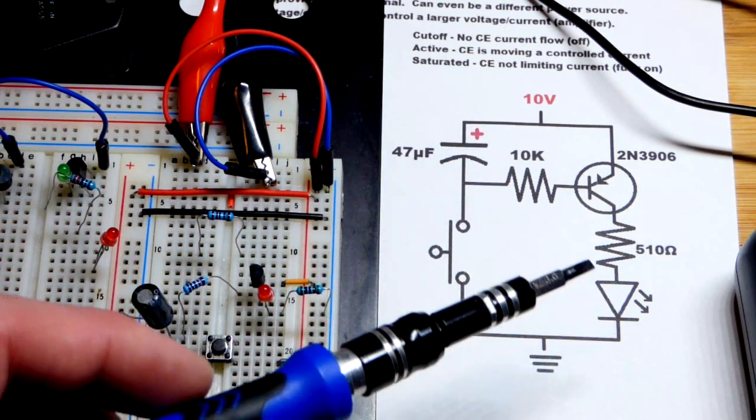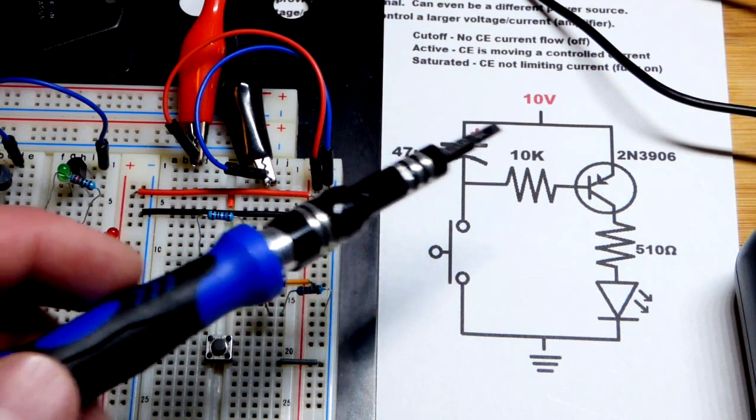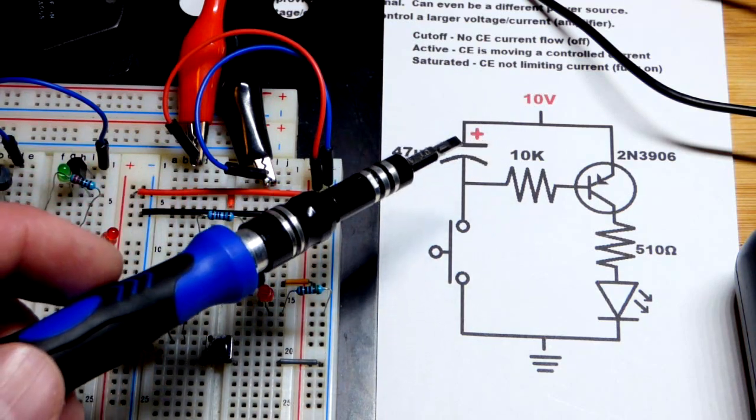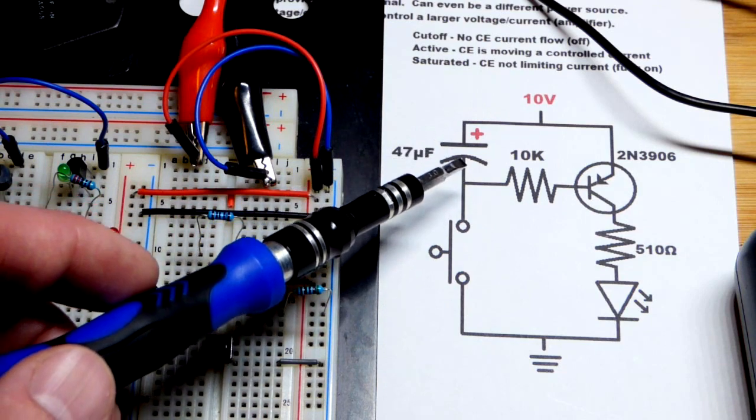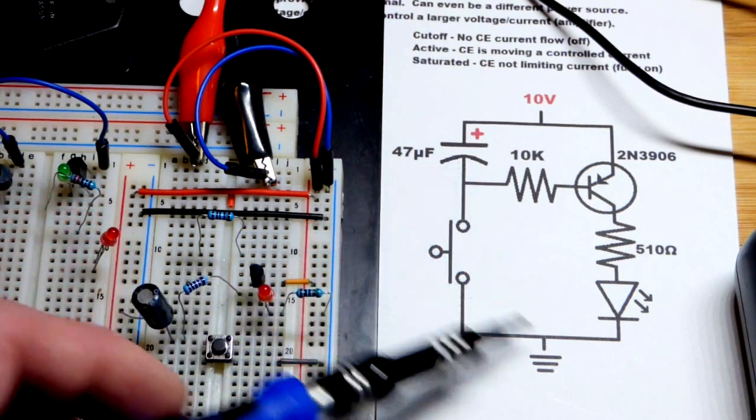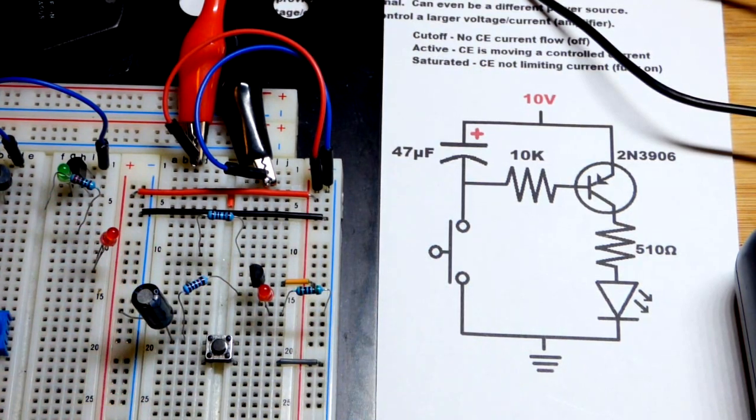Remember, it's polarized. And the way to make sure that side is always more positive than that side is to put it directly to the positive rail there, or to put that directly to the negative rail there.